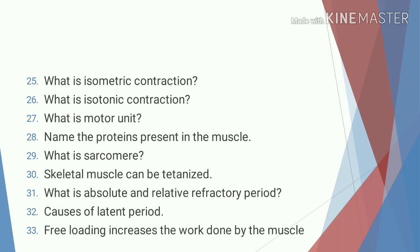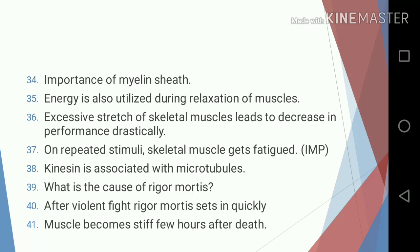Thirty-one, what is absolute and relative refractory period; thirty-two, causes of latent period; thirty-three, free loading increases the work done by the muscle; thirty-four, importance of myelin sheath; thirty-five, energy is also utilized during relaxation of muscles; thirty-six, excessive stretch of skeletal muscles leads to a decrease in performance drastically; thirty-seven, on repeated stimuli skeletal muscle gets fatigued; thirty-eight, kinesin is associated with microtubules.